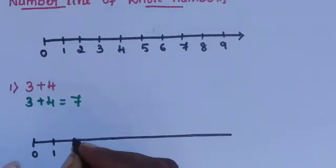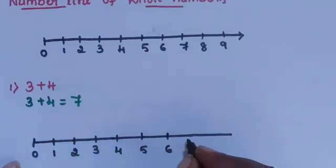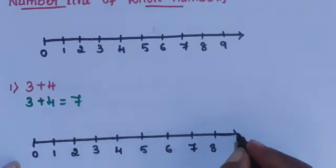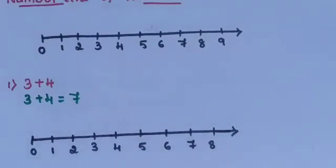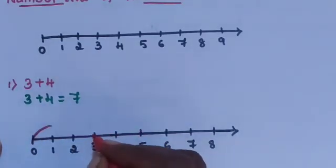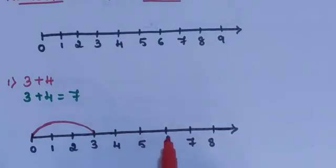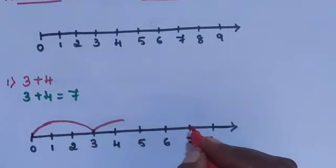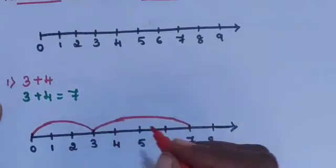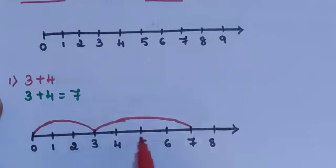Draw the number line: 0, 1, 2, 3, 4, 5, 6, 7, 8. First number is 3. First join 0 to 3, then add 4 by counting 1, 2, 3, 4. Join from 3 to 7. Therefore 3 plus 4 is equal to 7. This is the addition of whole numbers using a number line.